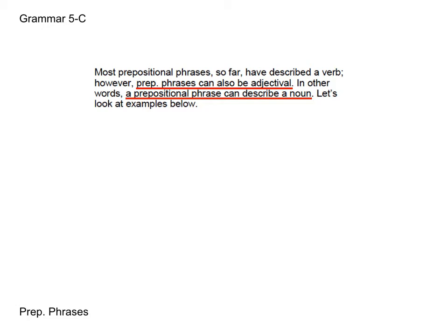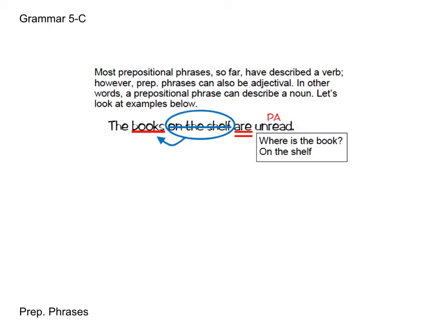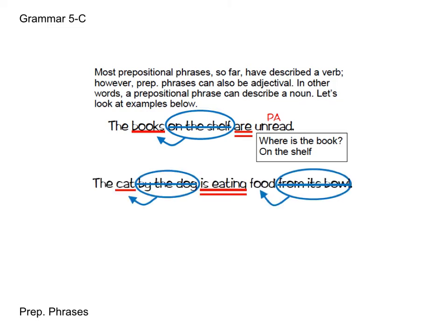Let's look at the examples on the front and side cover. 'The books on the shelf are unread' — 'on the shelf' is modifying the book, giving more information about where it is. 'The cat by the dog is eating food from its bowl' — 'by the dog' modifies where the cat is, and 'from its bowl' modifies the food. When a prepositional phrase modifies a noun, it is almost always next to that modified noun.